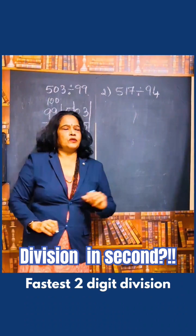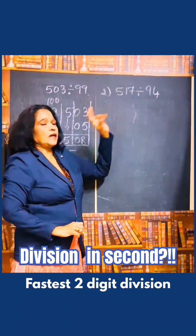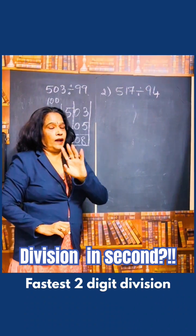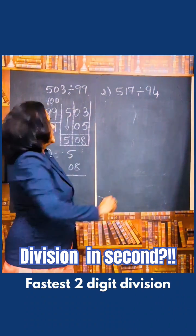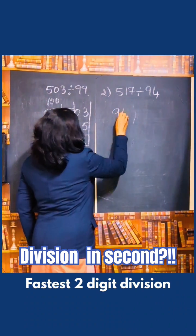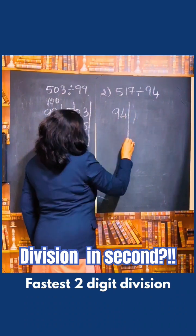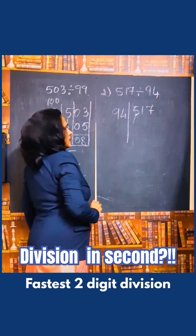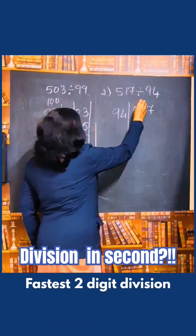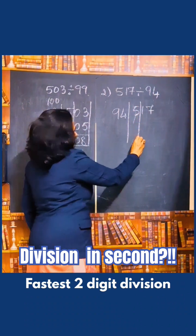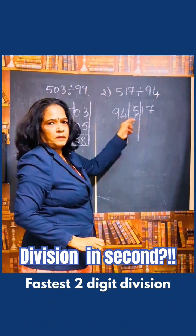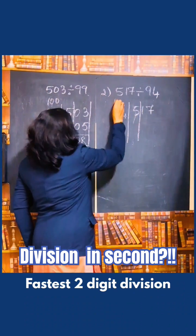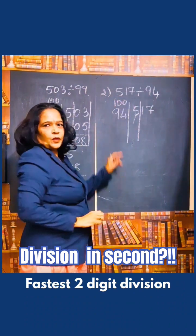We will see one more problem with the 94 tables. No need to practice the tables. Same process. 94. Draw the line. 517 is the number, that is the dividend. Divide it into two parts: remainder and quotient. Take two numbers as remainder because the base is 100.